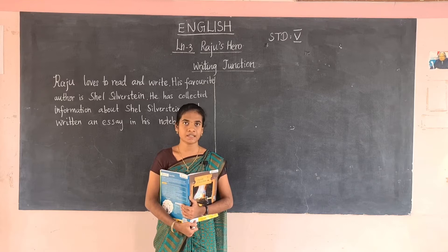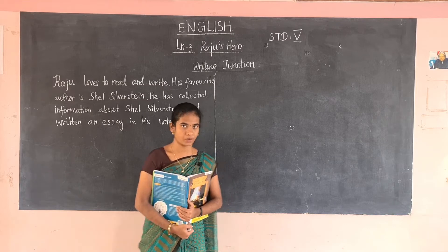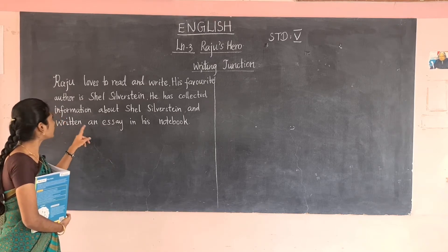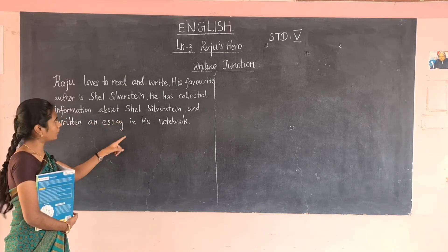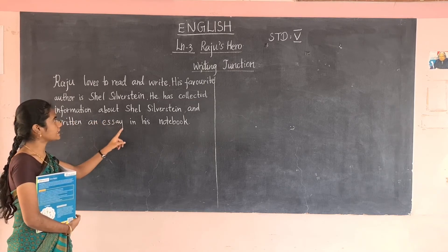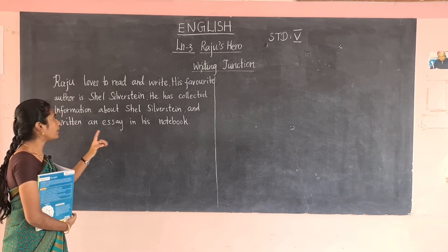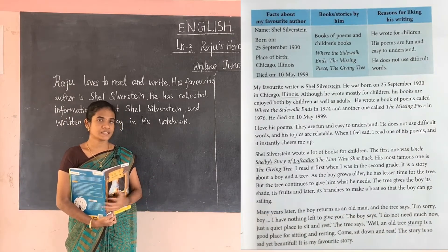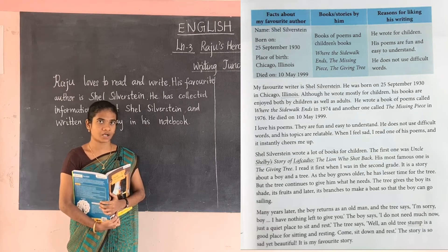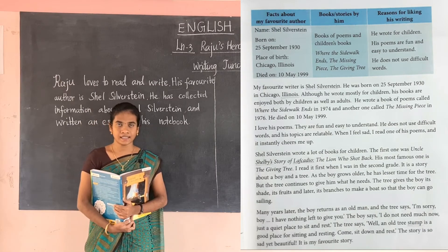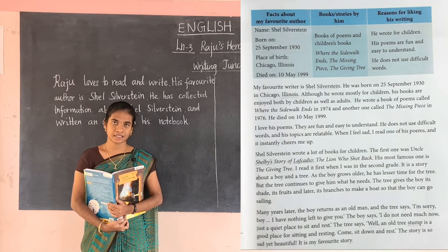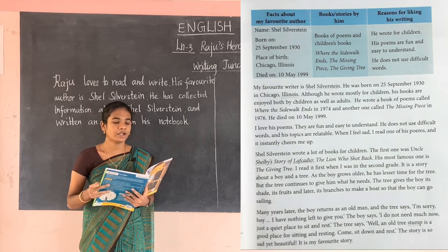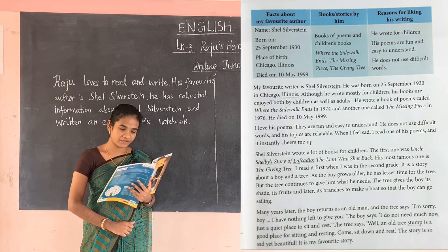Shel Silverstein is the famous author for Raju, so he has written an essay about him. Raju loves to read and write. His favorite author is Shel Silverstein. He has collected information about Shel Silverstein and written an essay in his notebook. First, they have given a tabular column.